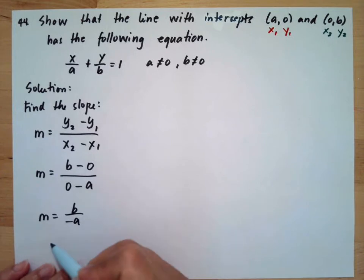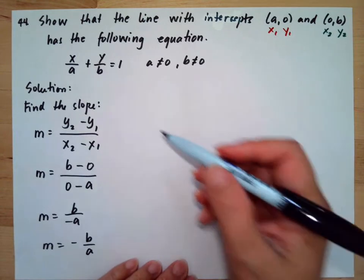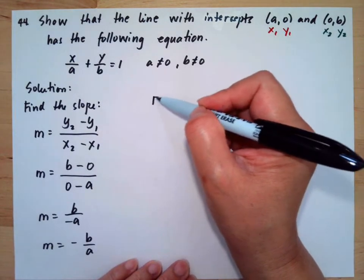To simplify this, we have b over negative a, or our slope is -b/a.